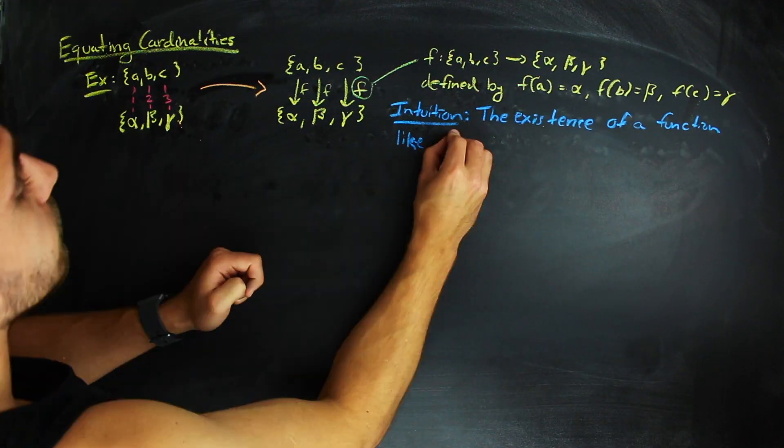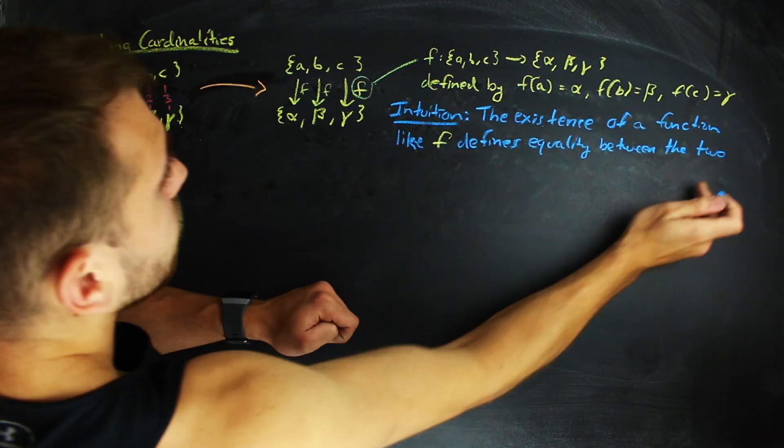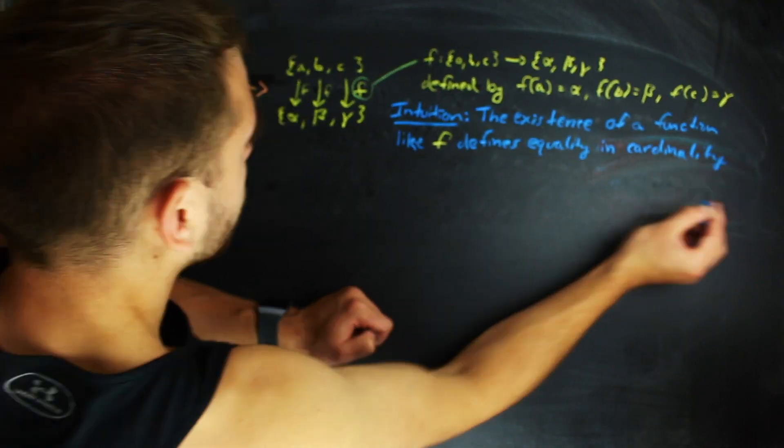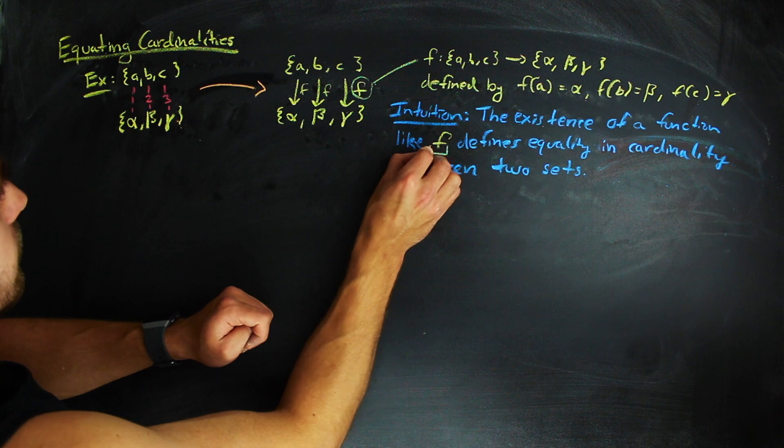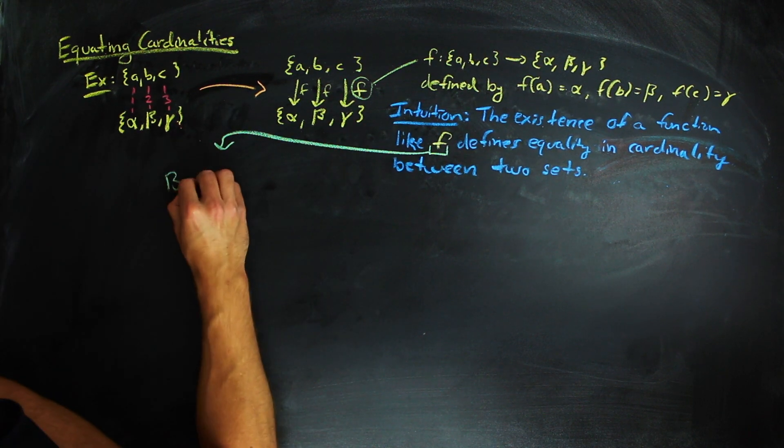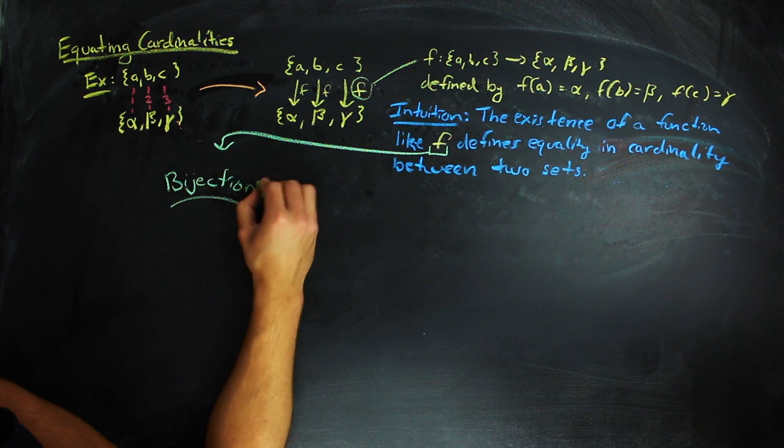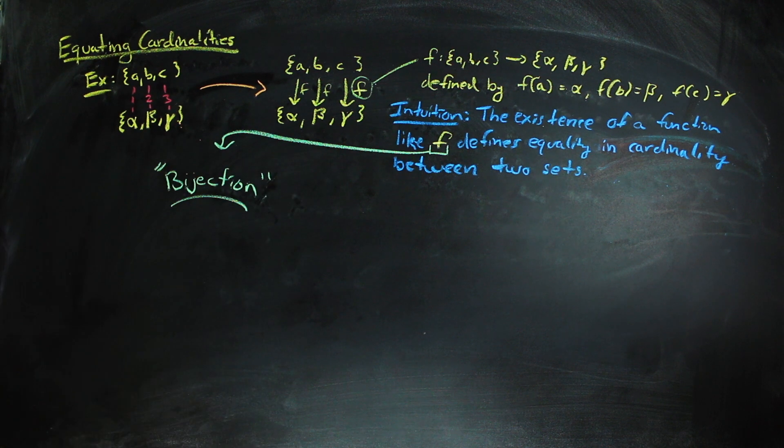Mathematically, the existence of a function like this is what we would define as two sets of the same cardinality. That is, two sets have the same cardinality if there exists a bijection from the first set to the second set. And bijection is what I mean when I say like the function between the sets of cardinality 3 over there. That is, a bijection is a function that is injective.